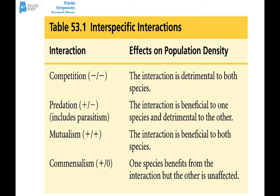So there we see our interspecific interactions. Competition is a negative-negative relationship. Predation is a plus-minus relationship — and note that parasitism is grouped in with predation. Mutualism is a plus-plus relationship, good for both. And commensalism is good for one of the partners but doesn't affect the other partner either in a positive or negative way.